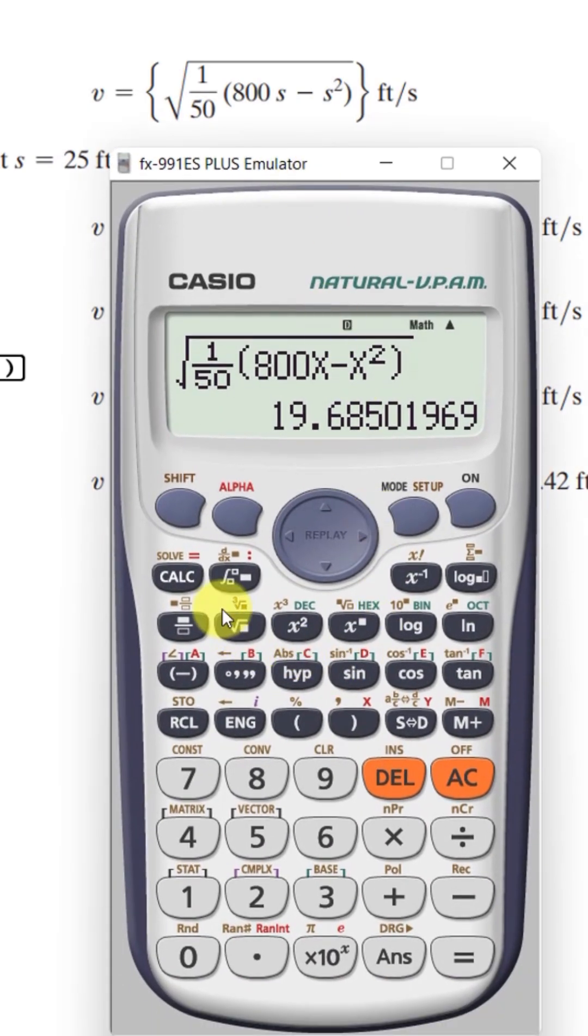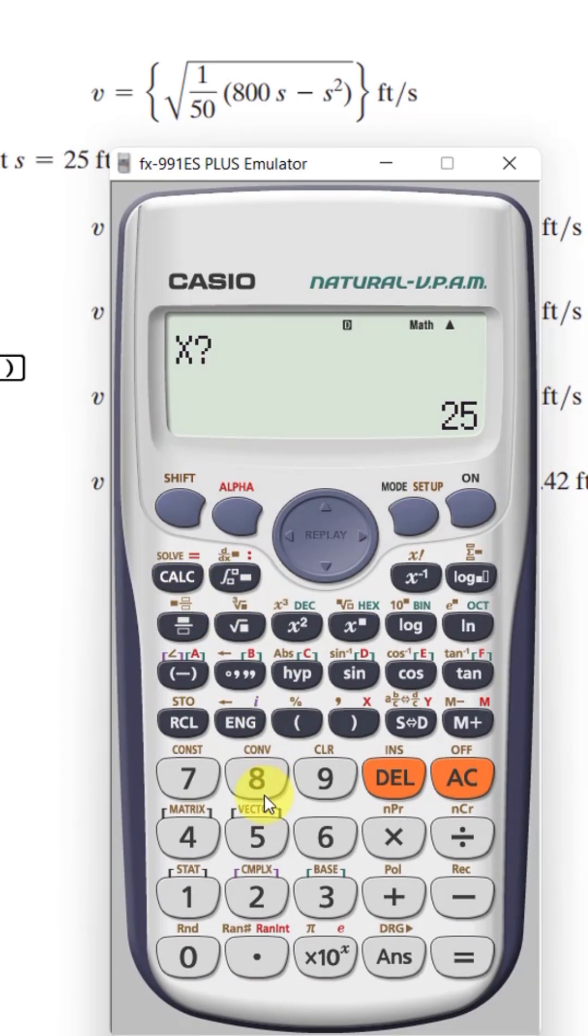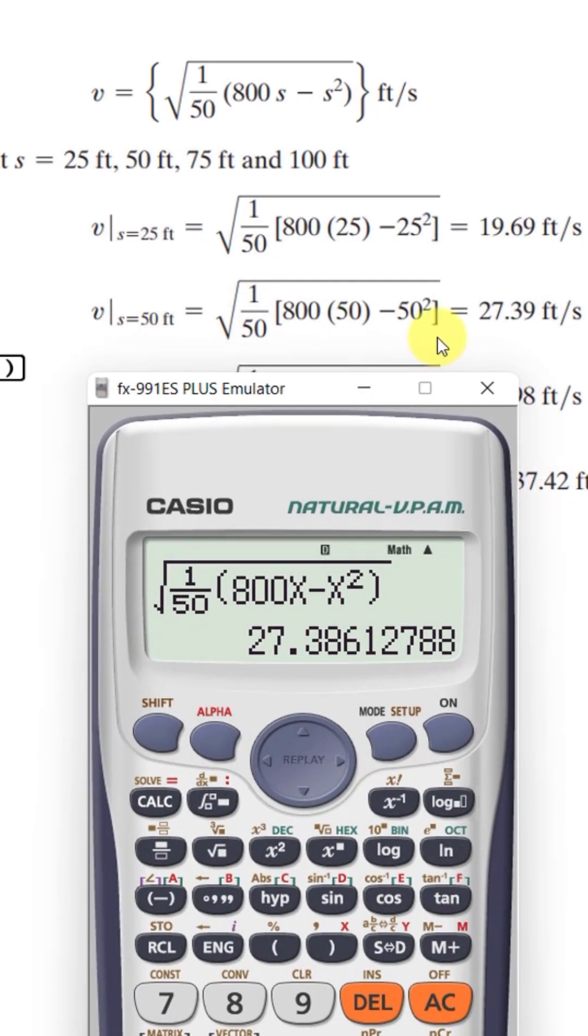Similarly for 75, again press calculate and then 50, for 50 again equal, the value is 27.39.